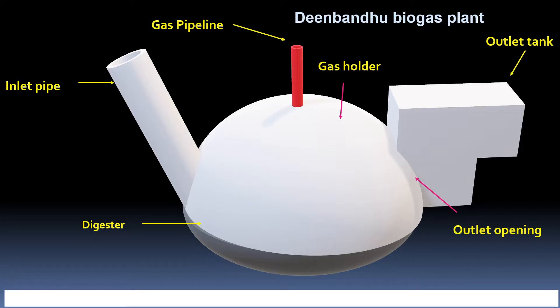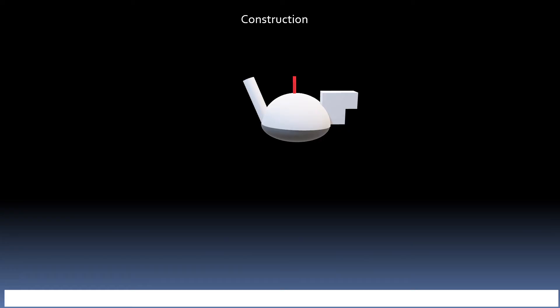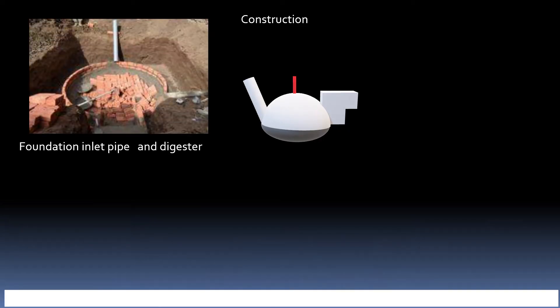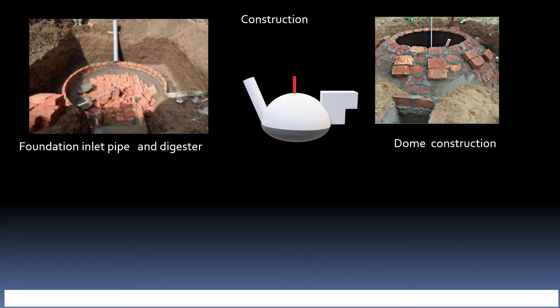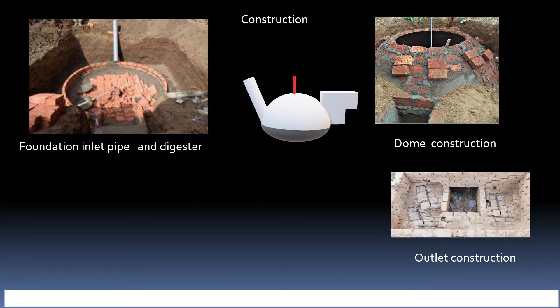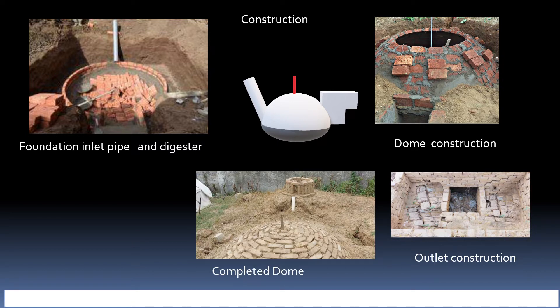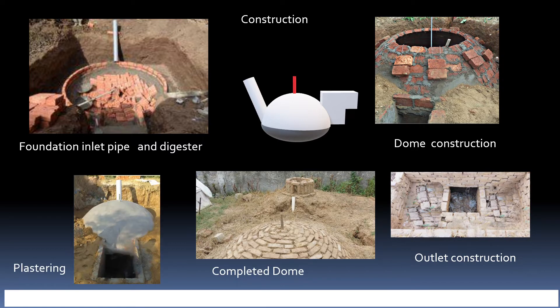Let us see some of the actual construction stages of the biogas plant to comprehend the working of the biogas plant. In the first stage, foundation is constructed with the placement of inlet pipe, and in this diagram dome and outlet can be seen. If you see the outlet from the top, it looks like this. You can also see the completed dome with gas pipeline here in this diagram.